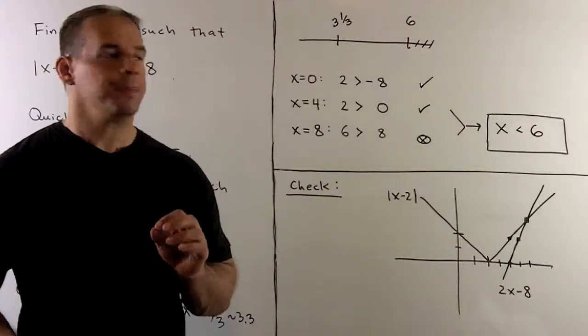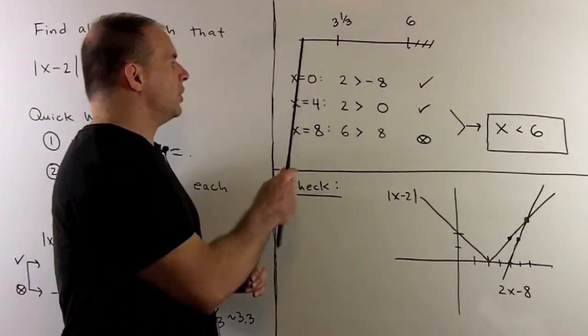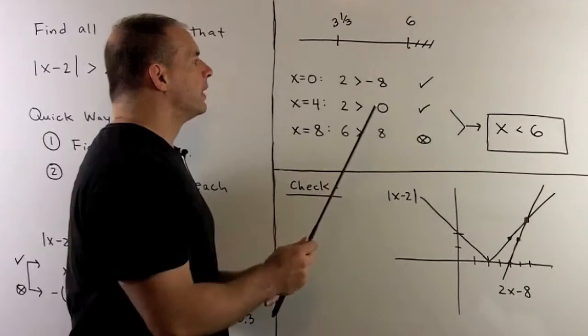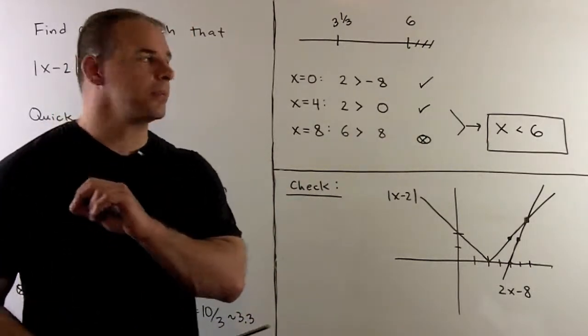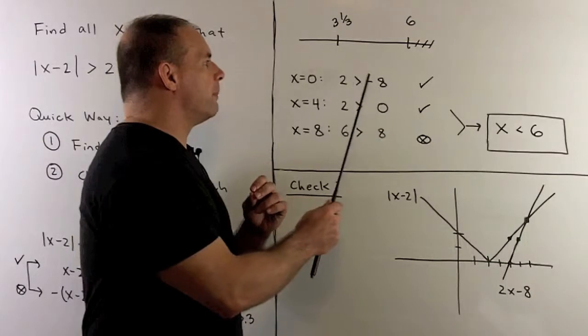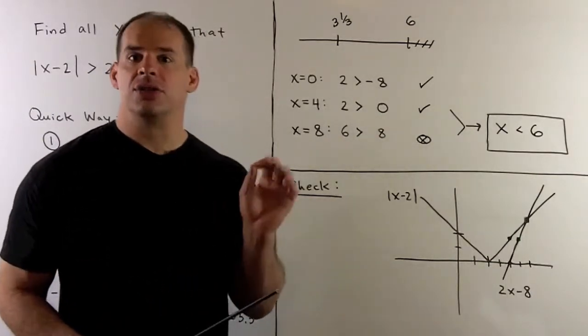I pick a point in each region, so I'll go with 0, 4, and 8, and then we test each point in our inequality. 2 greater than minus 8, yes, so we keep it. 2 greater than 0, yes, so we keep it.